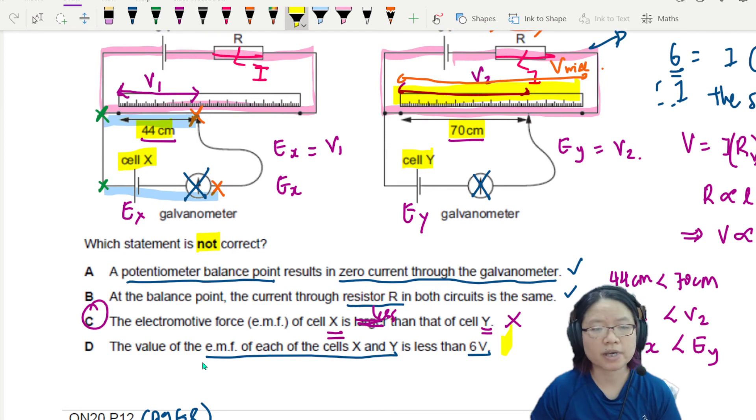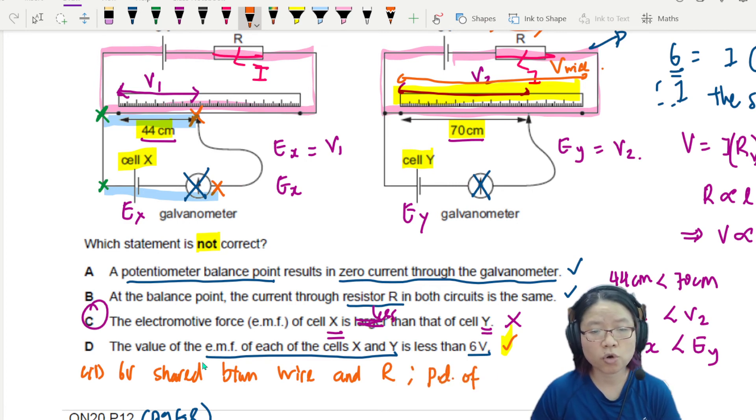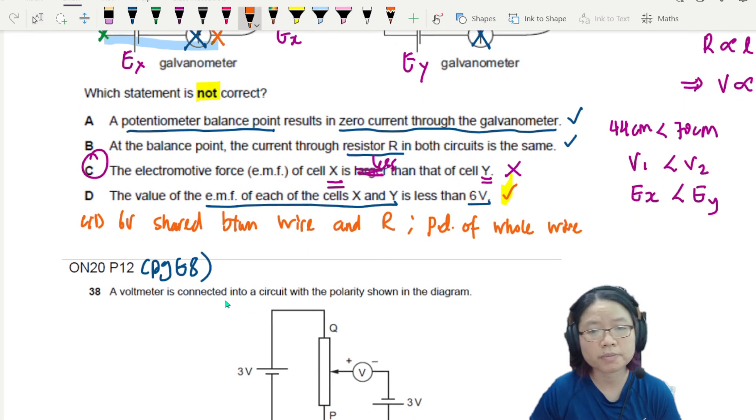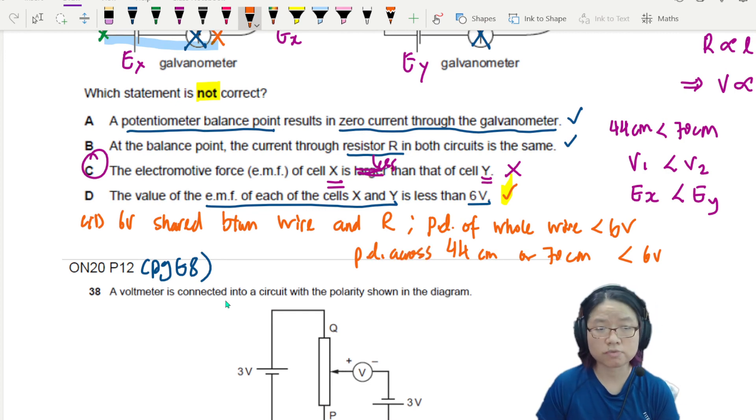So I'll write a brief explanation here. This one is correct. So 6V is shared between wire and R. R can take away some of the potential. So the potential difference of whole wire, the whole wire, is already less than 6. Already less than 6. So hence, 44 cm or 70 cm is less than 6V. So PD across 44 cm or 70 cm, definitely less than 6V.